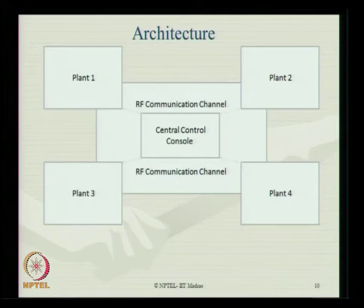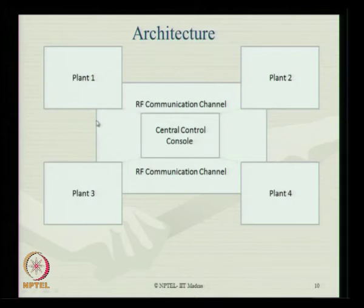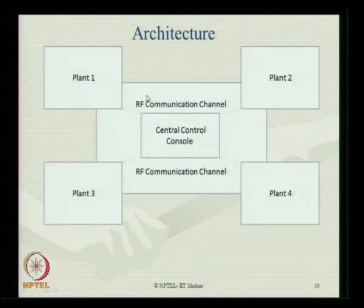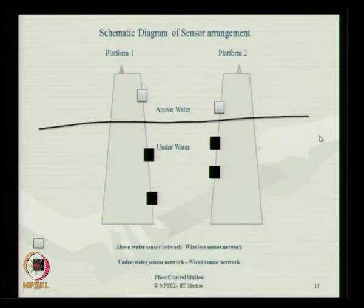The layout of the architecture consists of offshore plants — for example, production platform, operational platform, and drilling units as plants 1, 2, 3, and 4 — located in close vicinity, as drilling units are generally near the central well. These are connected using an RF communication channel to a central control console. The schematic diagram for sensor arrangement shows sensors located both underwater and above water, with platform local control stations located well above the water level.